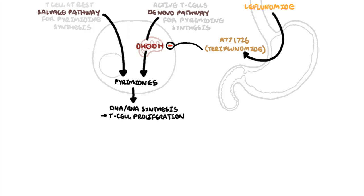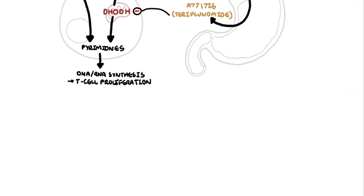Inhibition of dihydroorotate dehydrogenase by teriflunomide essentially prevents production of pyrimidines by the de novo pathway. Such inhibition leads to decreased pyrimidine synthesis, decreasing DNA and RNA synthesis.